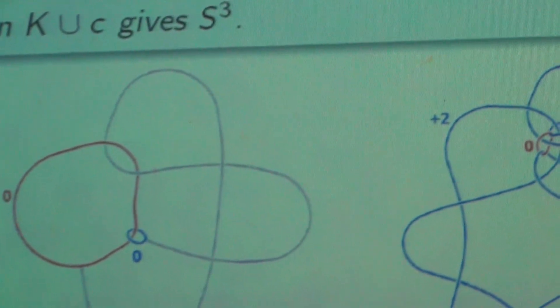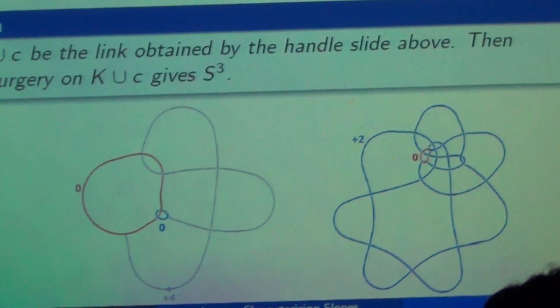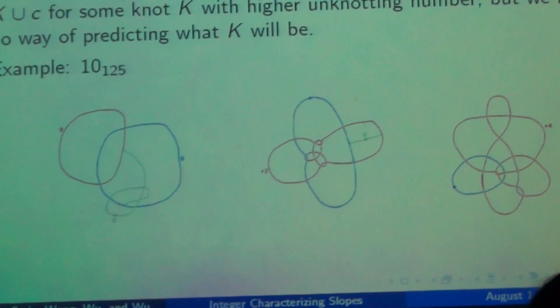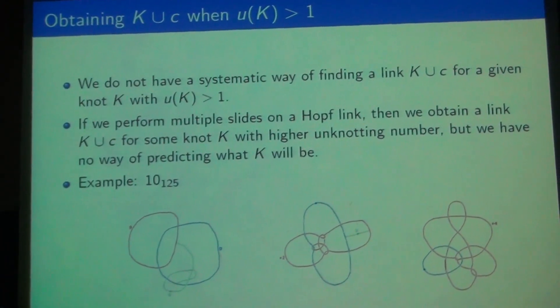So this shows that zero-zero surgery on K union C is the same as plus or minus two zero surgery on a hoplink, and we said before that that's S³. So this gives us a link K union C that fits into Baker-Motegi.